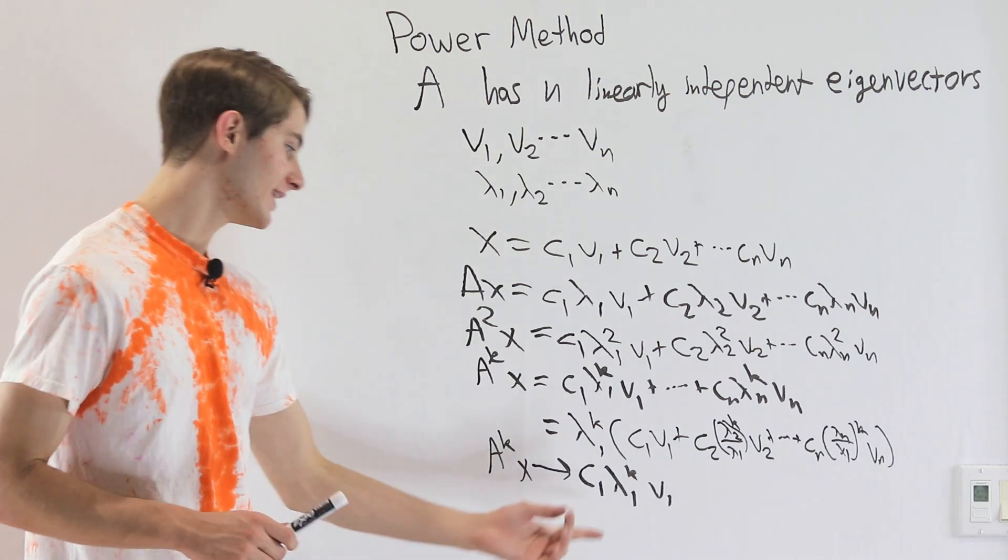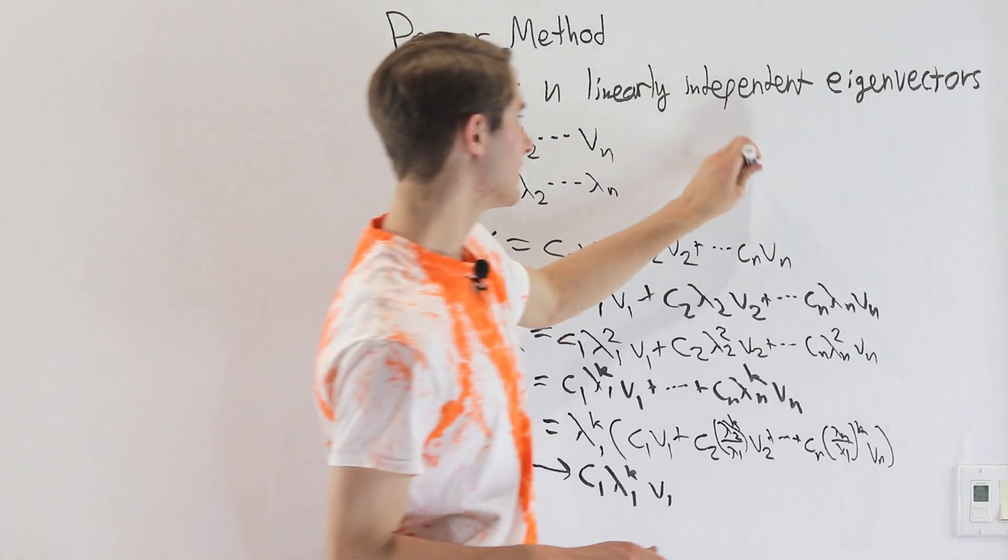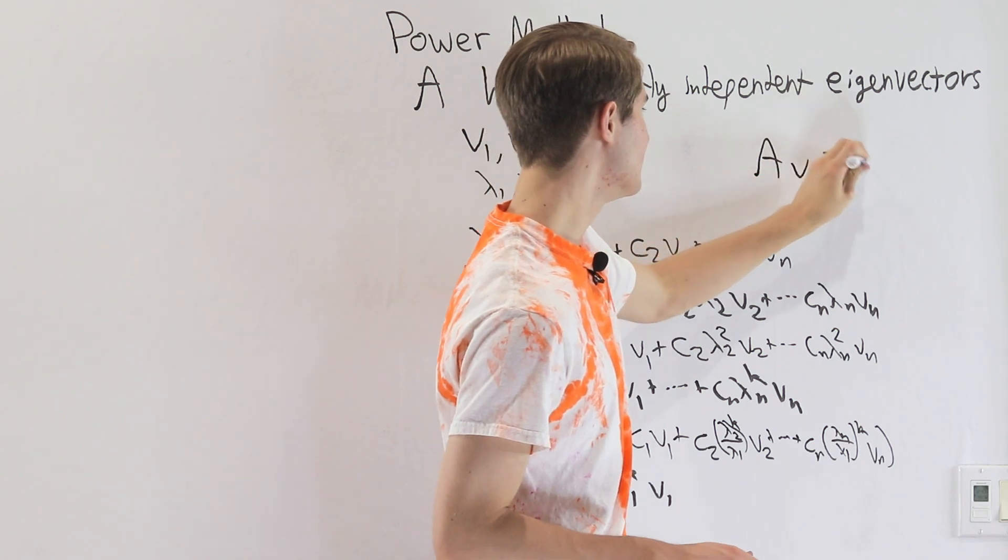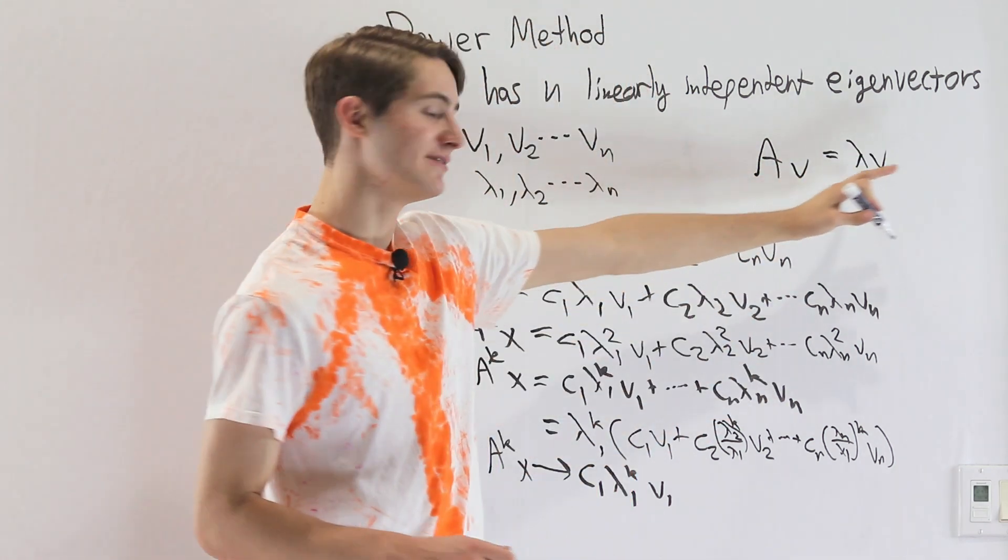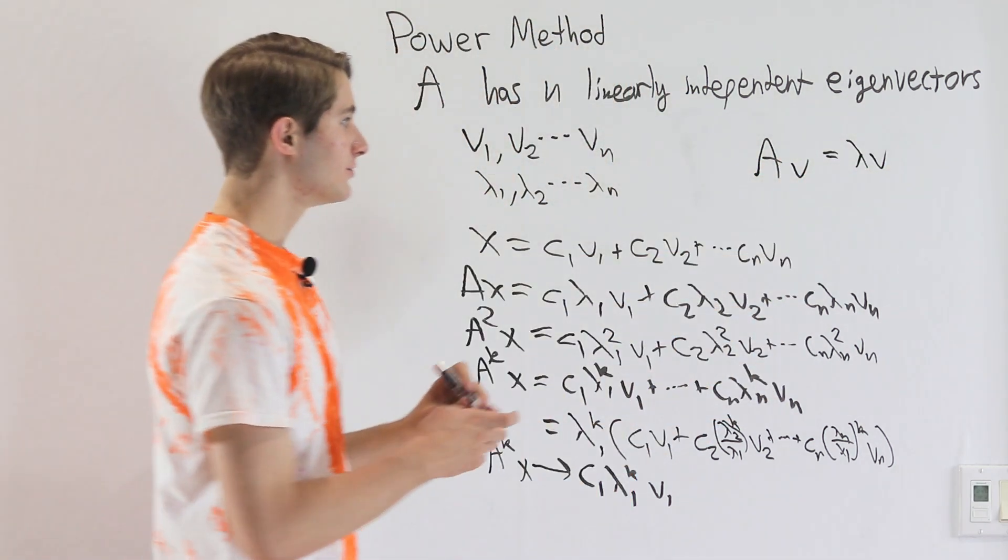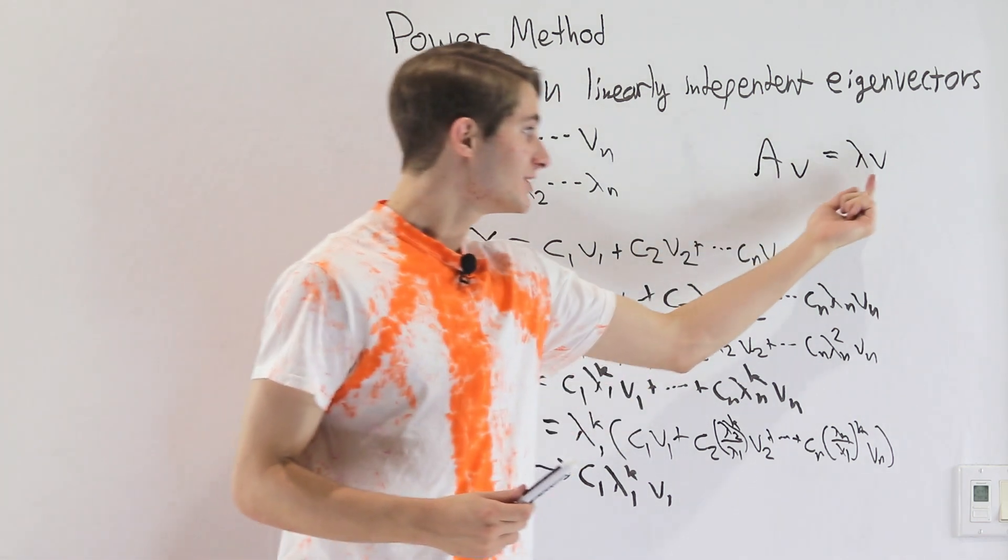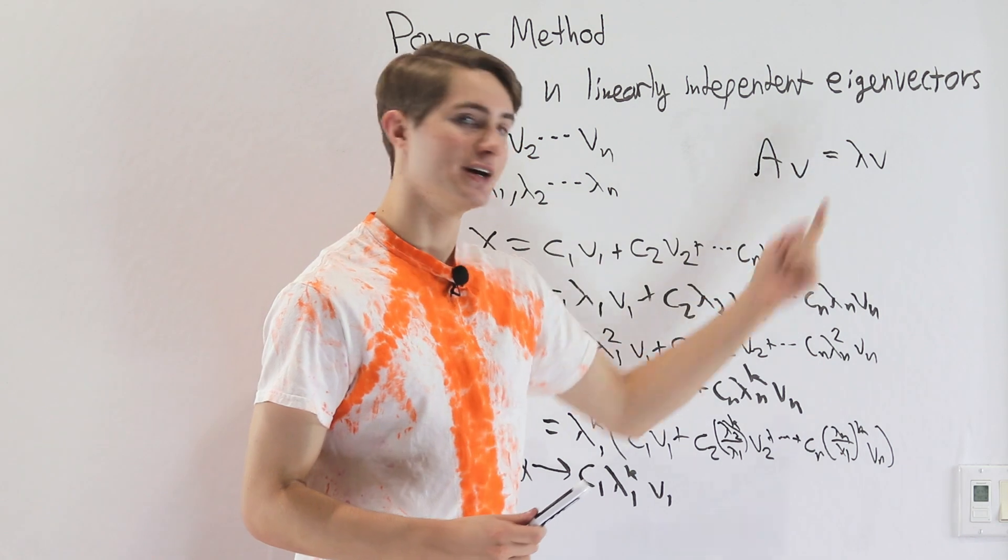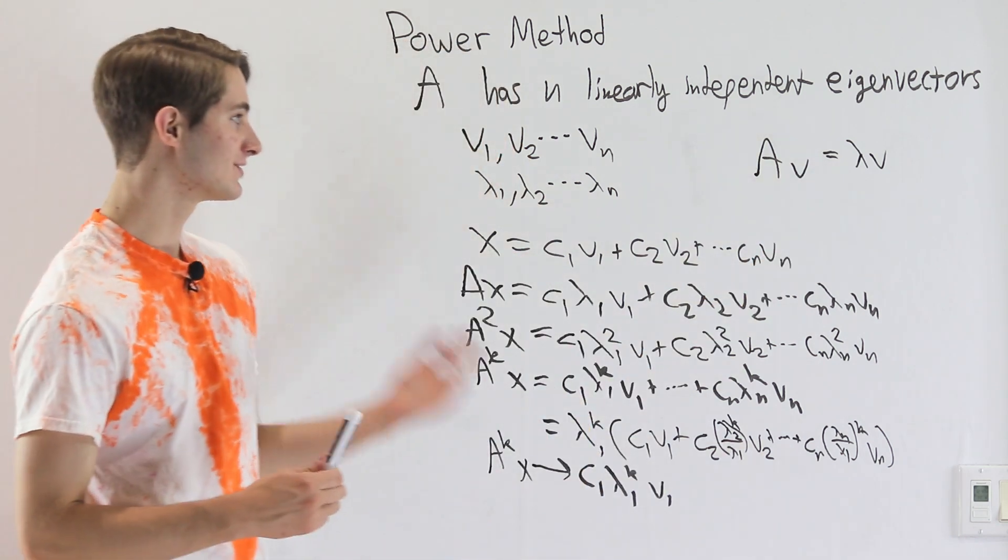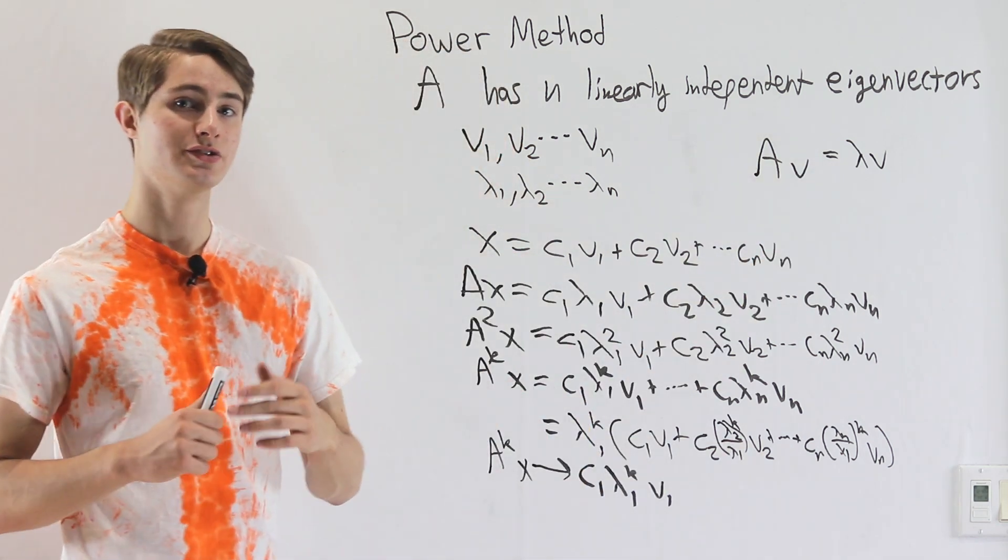And remember that once you have the eigenvector, it's very easy to find the eigenvalue because we know that Av equals lambda v. This is the definition of an eigenvector. So if we just take our eigenvector and multiply by the matrix one more time, however much it gets scaled, that lambda value is our eigenvalue, which makes that very easy to compute.